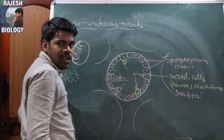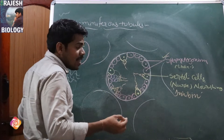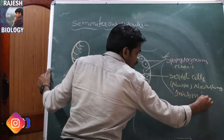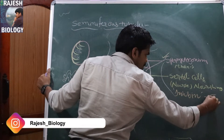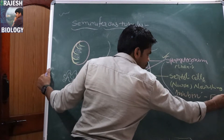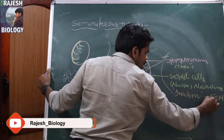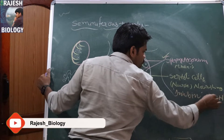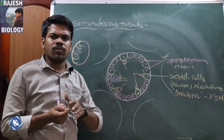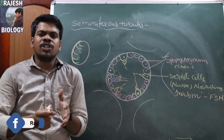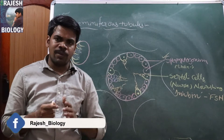Inhibin functions to inhibit the secretion of FSH — Follicle Stimulating Hormone. So Sertoli cells release inhibin to stop the secretion of FSH. Let's think logically why Sertoli cells secrete inhibin.